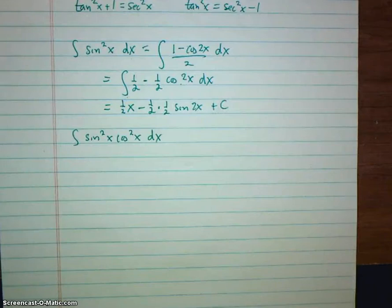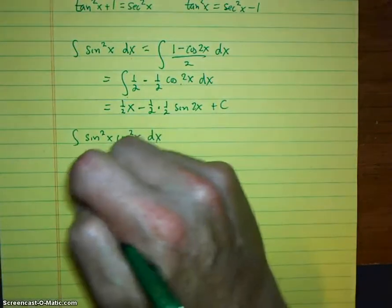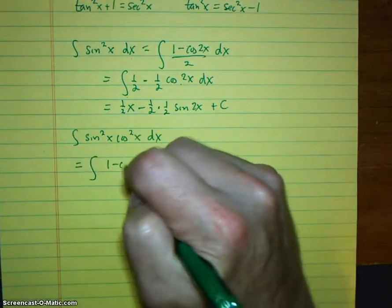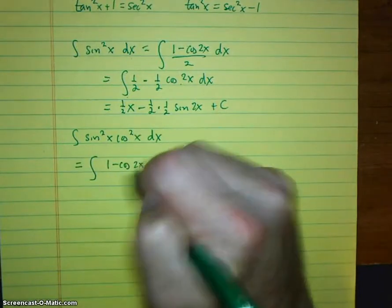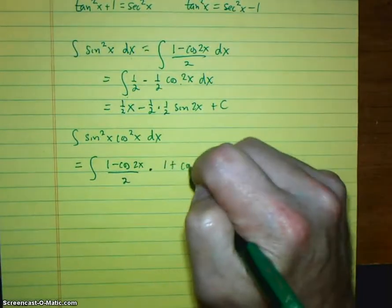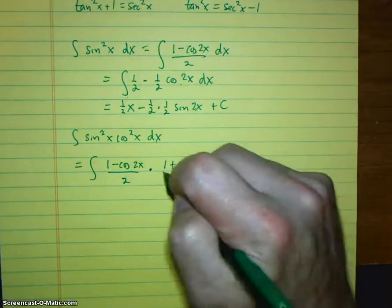Again, the issue is that they are both even powers. So what we have to do is use the power reduction formulas for each one. So it's 1 minus cosine 2x over 2 times 1 plus cosine 2x over 2.